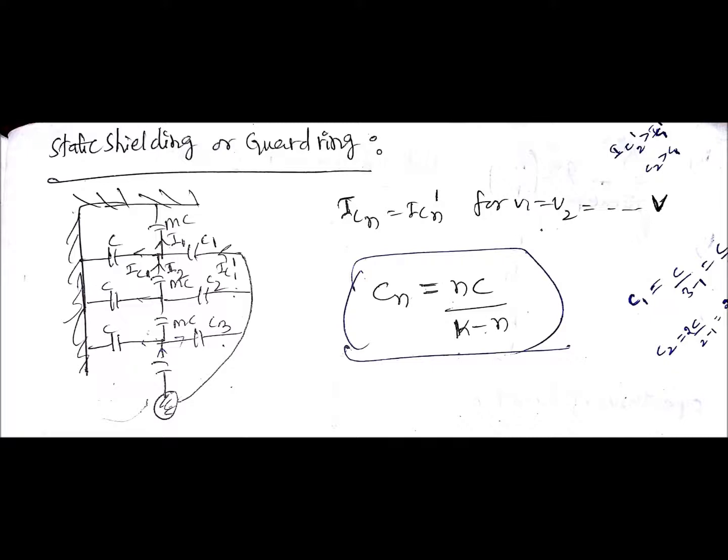IC1 prime is the current flowing through C1, the external capacitance that you have added, and IC1 is the current flowing through the mutual capacitance. When both of them become equal, the current coming from insulator 2 through which I2 is flowing will equal current I1. That will happen only when ICN equals ICN prime. So this is the target here.